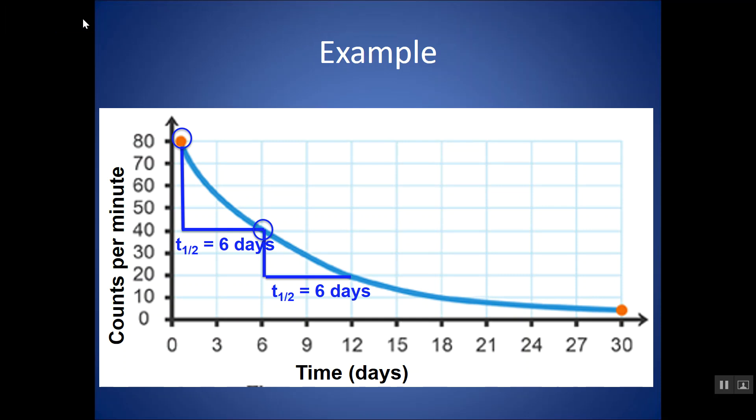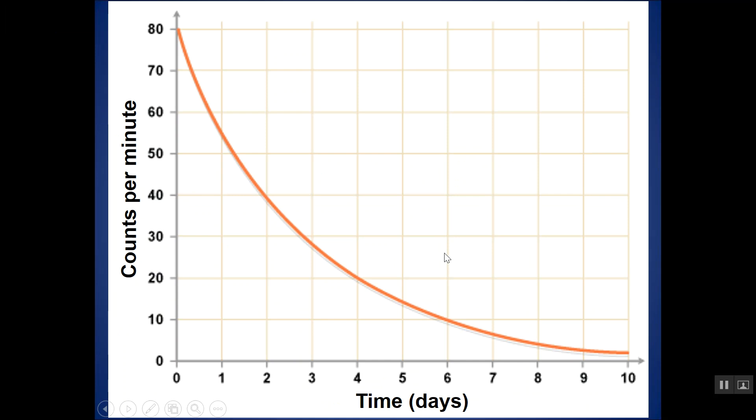So just showing again with another example. Here's another example. Here I'm starting—I can pick any point on the graph to start with—pick a point on your best fit curve, go down to half, and go across, and the length again of that horizontal line gives me the half-life, in this case 2 days.